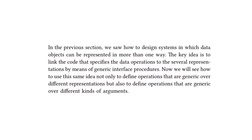The textbook starts out by stating: in the previous section, we saw how to design systems in which data objects can be represented in more than one way. The key idea is to link the code that specifies the data operations to the several representations by means of generic interface procedures.